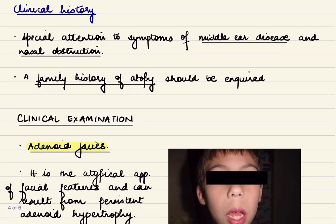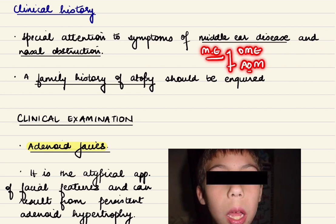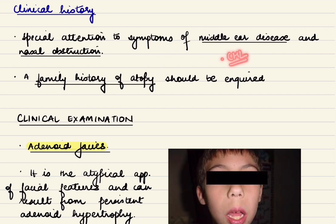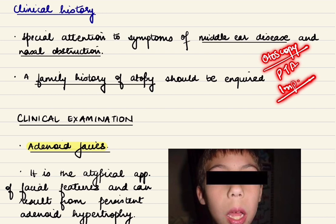In the clinical history, special attention must be paid to symptoms of middle ear disease and nasal obstruction. Common middle ear manifestations are otitis media with effusion and acute otitis media. Otitis media with effusion typically presents with conductive hearing loss, diagnosed with otoscopy, pure tone audiometry, and impedance audiometry.